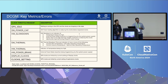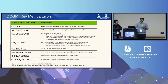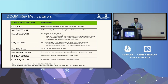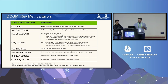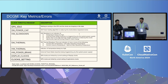DCGM exporter can export many metrics including XID and ECC errors. This slide presents metrics related to clock throttle reasons. Clock throttling leads to degraded performance and often explains straggler behavior. Software thermal or hardware thermal metrics indicate temperature is too high. Display clocks determine rendering speed and clock settings determine processor speed.